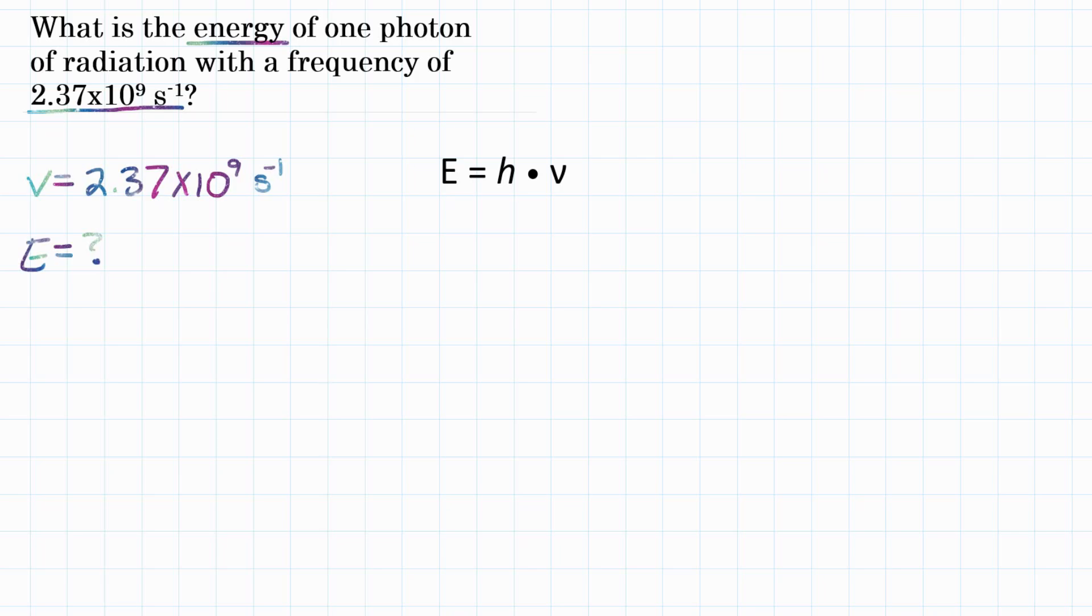So given the information from the problem, given frequency and looking for energy, we're going to use this equation here. Where E, which is energy, is equal to H, which is known as Planck's constant, times V frequency. So we need H, we need Planck's constant.